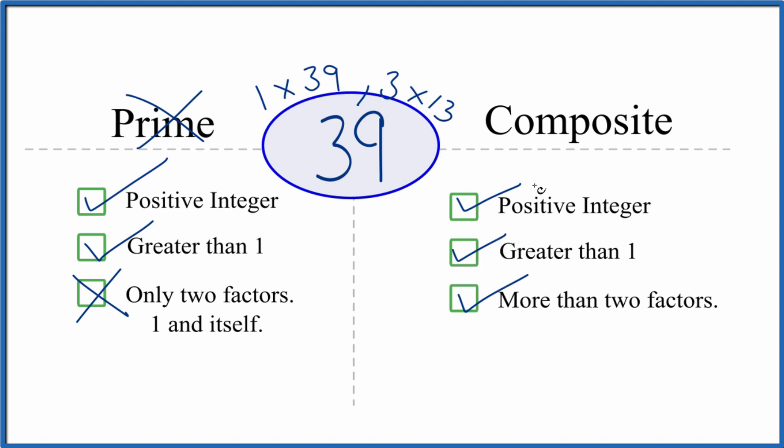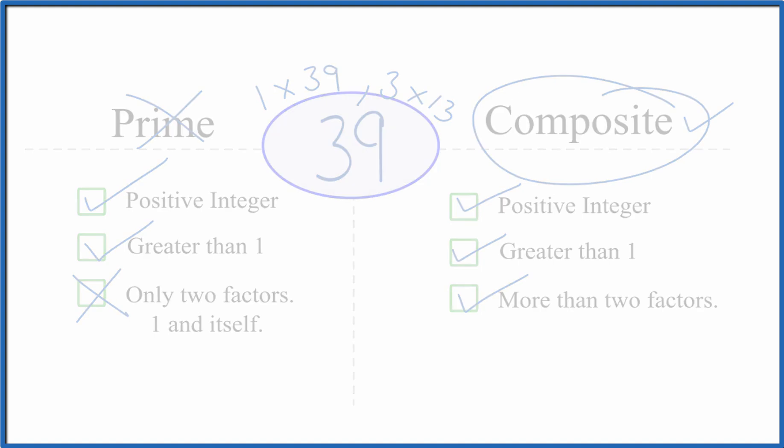Because of that, 39 is considered a composite number. This is Dr. B looking at whether 39 is a prime number or a composite number. It's composite. Thanks for watching.